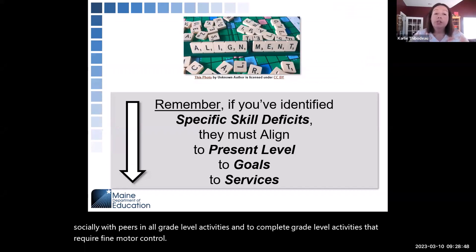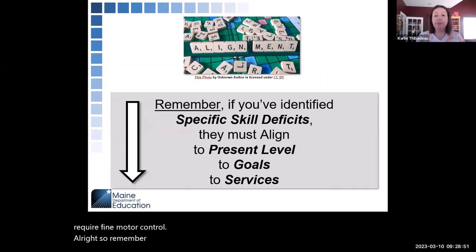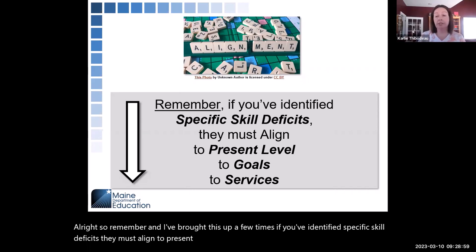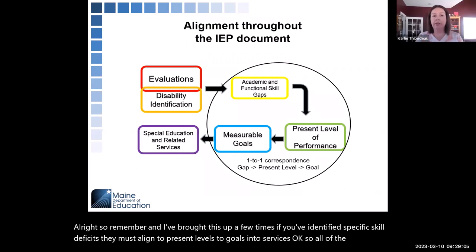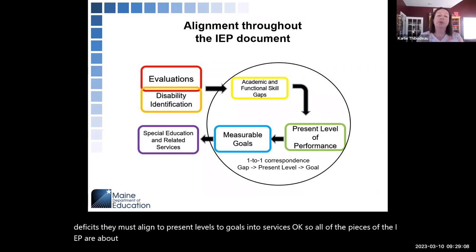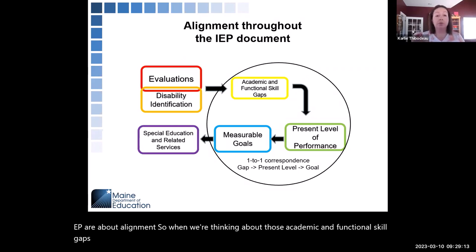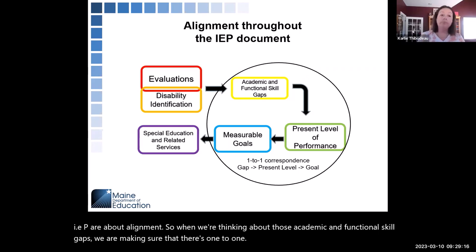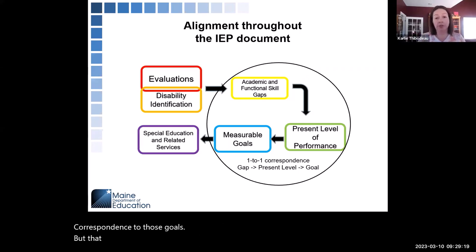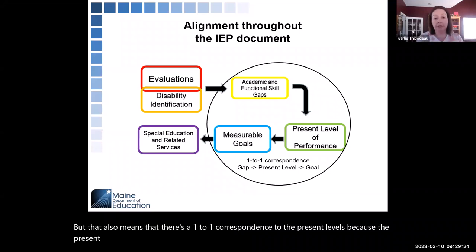Remember: if you've identified specific skill deficits, they must align to present levels, to goals, and to services. All of the pieces of the IEP are about alignment. The academic and functional skill gaps must have a one-to-one correspondence to goals, and those goals must also align to the present levels — so you can see how all of these pieces fit together.